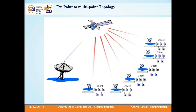In this diagram, we can see there is one satellite sending a signal to various receivers. There are many clients or receivers and there is only one sender. So we can say this is point-to-multipoint topology.